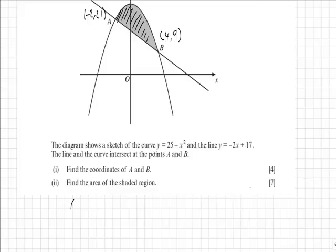So what we're effectively going to have to do is the integral between minus 2 and 4 of 25 minus x squared, subtract the integral between minus 2 and 4 of minus 2x plus 17.